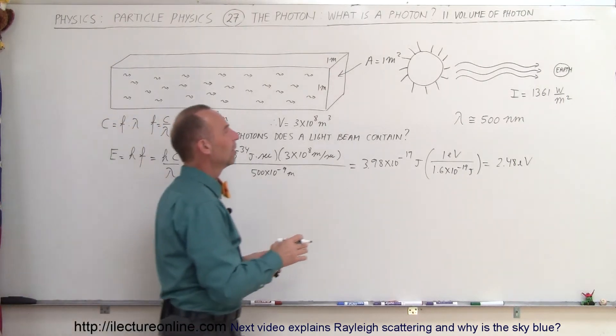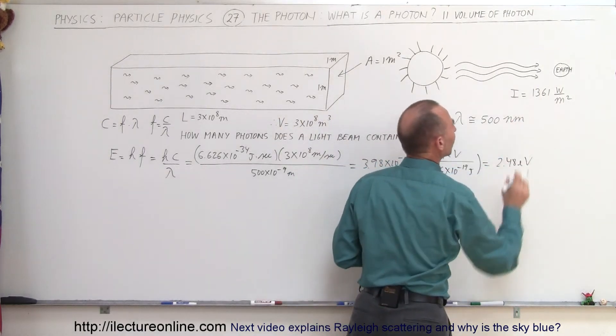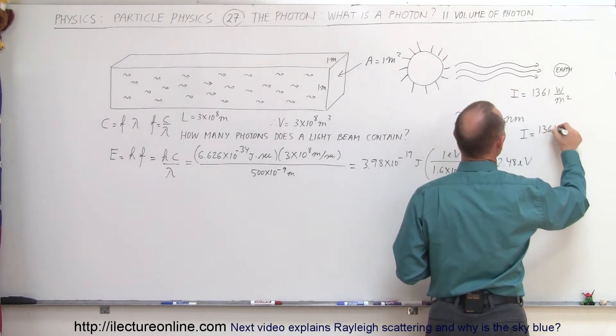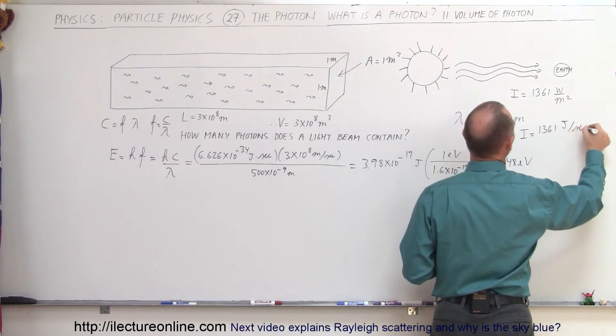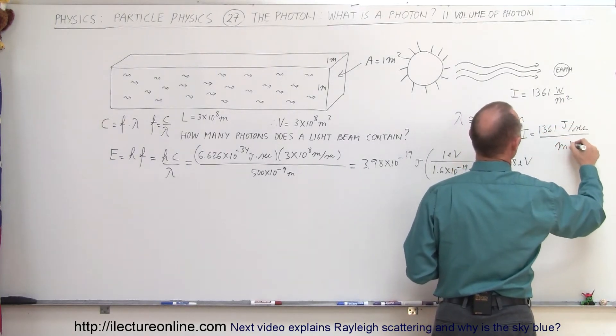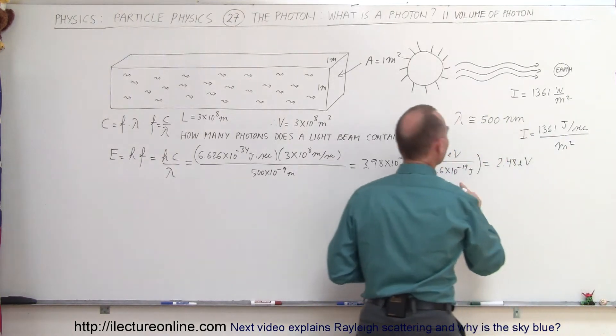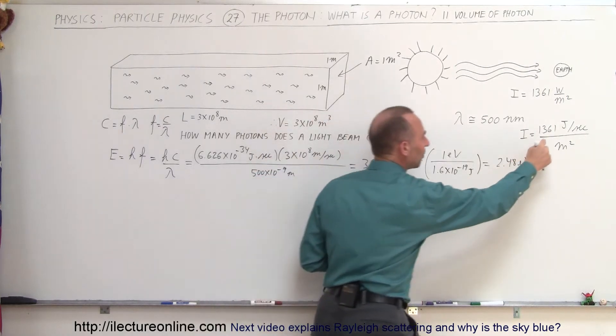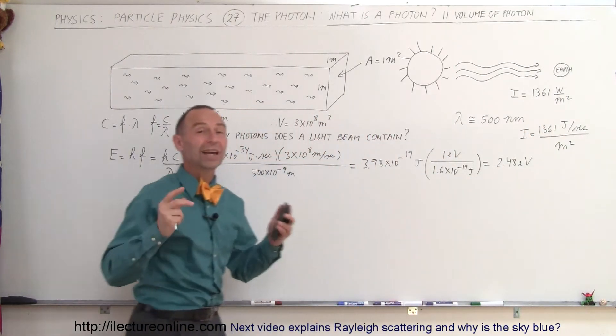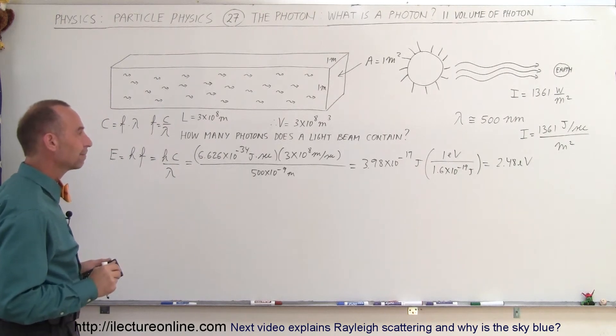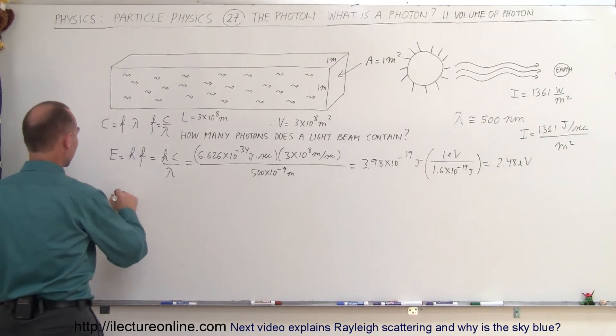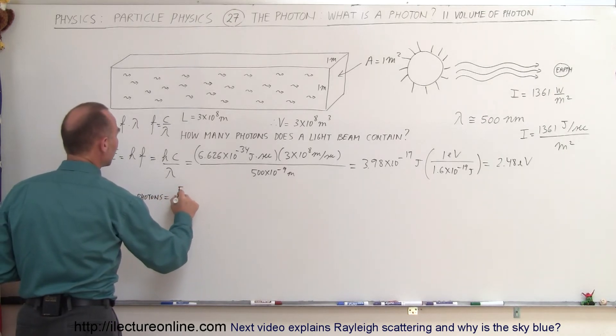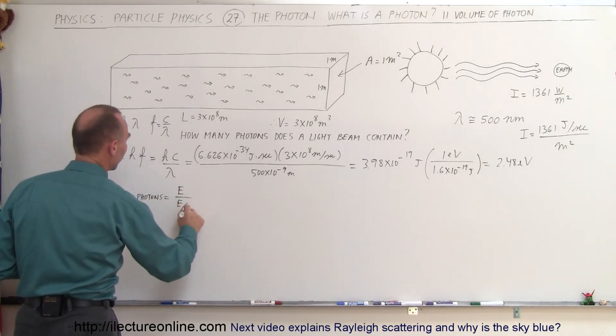So how many photons do we need to make up 1,361 joules? Remember that the intensity is equal to 1,361 joules per second, that's what a watt is, divided by a square meter. So how many photons do we need, if each photon has this much energy, how many photons do we need to make up this much energy striking the earth for every square meter, every single second? Well, all we have to do is to find the number of photons.